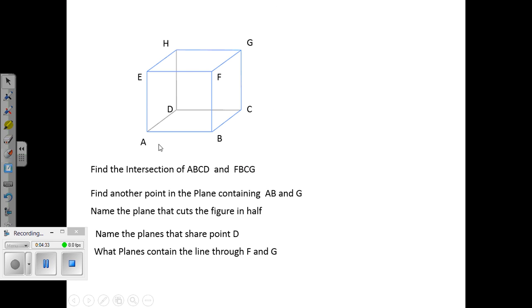Find the intersection. This ABCD is sort of like the floor plane. FBCG is like one of the walls that are intersecting at BC. Find another point in the plane containing A, B, and G.